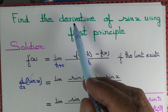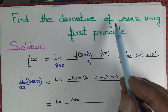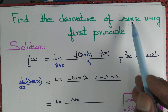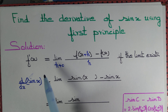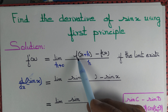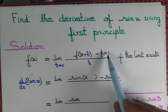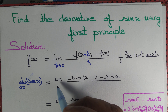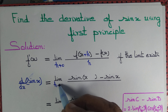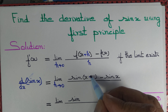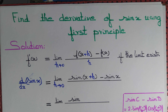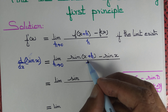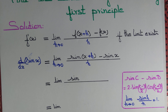Let us find the derivative of sin x using first principles. The derivative of a function is defined as the limit as h tends to 0 of f(x+h) minus f(x) divided by h, if the limit exists. Therefore, the derivative of sin x is defined as the limit as h tends to 0 of sin(x+h) minus sin(x) divided by h, if this limit exists.